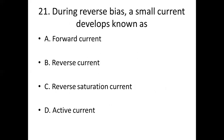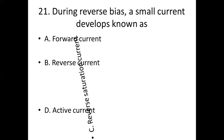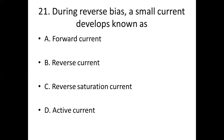21st bit. During reverse bias, a small current develops known as dash. Option A: forward current. Option B: reverse current. Option C: reverse saturation current. Option D: active current. Answer: Option C, reverse saturation current.